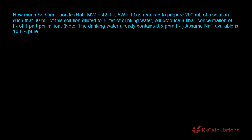Analyzing the question: the solution is being added to drinking water, which already has 0.5 ppm of fluoride ion. We assume the 30 mL preparation is made with sterile water for injection — not drinking water. Therefore, the actual volume of drinking water in the one-liter preparation is 970 mL (i.e., 1000 mL − 30 mL). That's an important assumption.